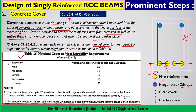As per IS code clause 26.4.2, the minimum nominal cover to meet durability requirements for normal weight aggregate concrete is given in table 16 of IS 456. The nominal cover shall not be less than 20 mm for mild exposure conditions. As exposure severity increases from mild to moderate, severe, very severe, and extreme, the required concrete cover increases — up to 45 mm for severe exposure — to better protect the steel reinforcement.